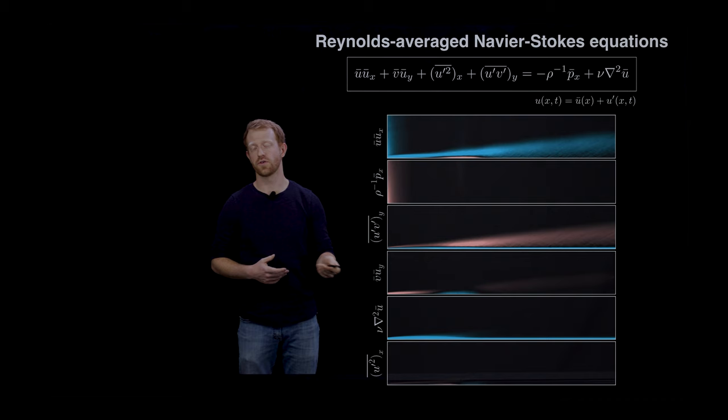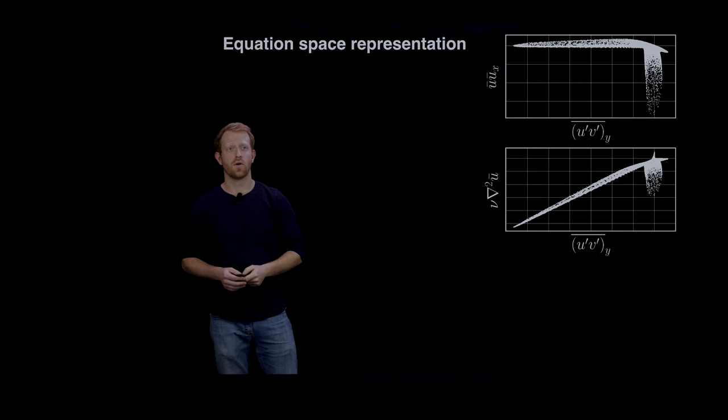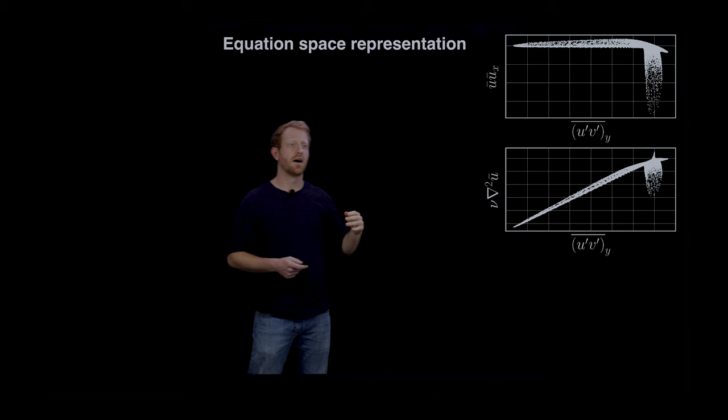We could also think about visualizing this by taking each point in the discretized domain and doing a six-dimensional scatter plot where each of the terms in the governing equation corresponds to one of the coordinates. We'll call this the equation space representation of the field.